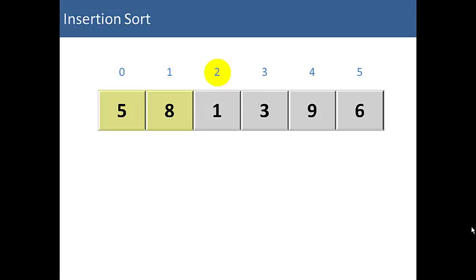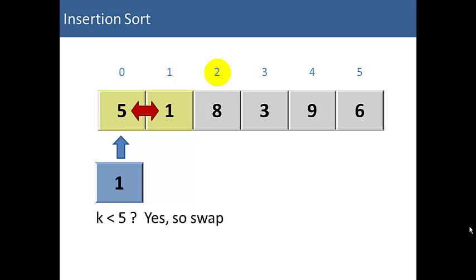And then we'll look at item number 2 in our list, which is 1. So we'll assign k equals to 1. Our first comparison is, is k less than 8? Well, yes it is. 1 is less than 8. So it's going to swap 8 and 1. Our key does not change though. Our k value is still equal to 1. So our next comparison is 1 less than 5. Yes it is. So it's going to swap 5 and 1.